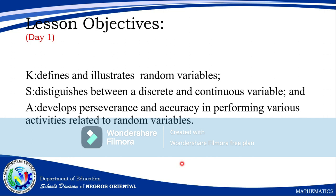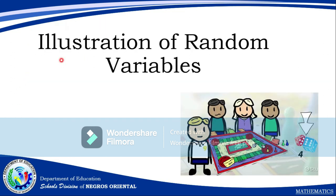We'll start with the lesson objectives for Day 1. Under knowledge, we have: defines and illustrates random variables. Under skills: distinguishes between a discrete and continuous variable. And for the affective domain: develops perseverance and accuracy in performing various activities related to random variables. At the end of this first video lesson, you will be able to achieve all of these objectives.